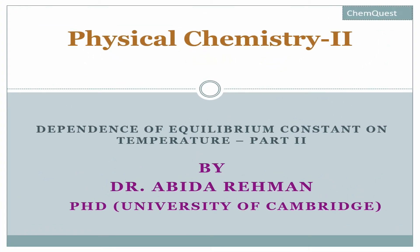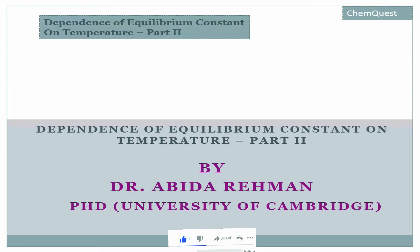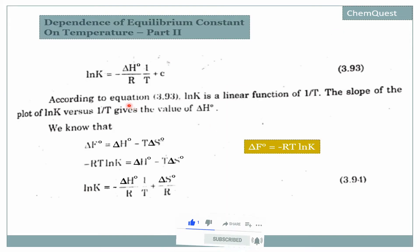Assalamu Alaikum students, welcome to Physical Chemistry 2. We are going to discuss the dependence of equilibrium constant on temperature, Part 2. In the previous lecture, we were left with this equation: ln K = −ΔH°/R × (1/T) + C. According to this equation, ln K is a linear function of 1/T.